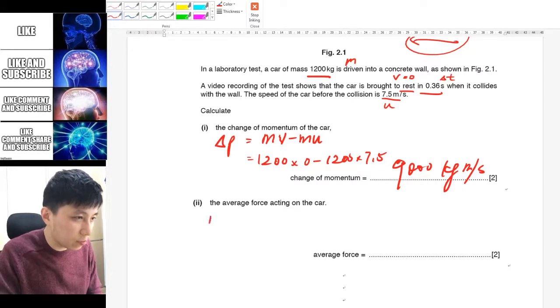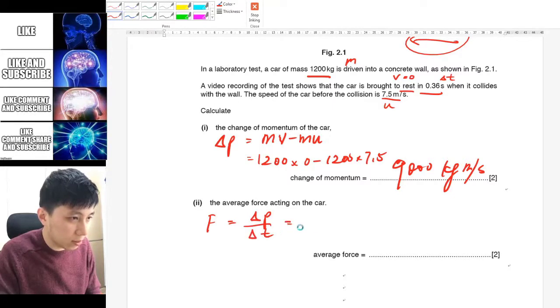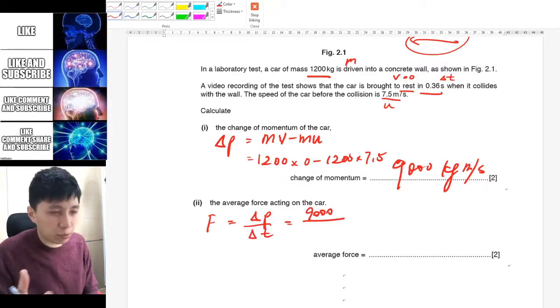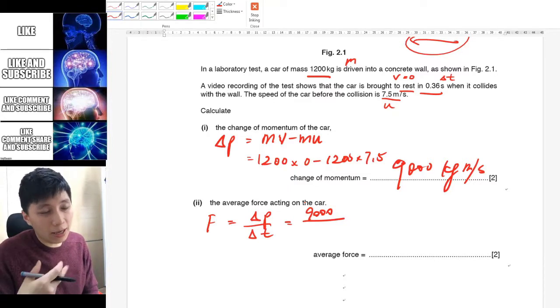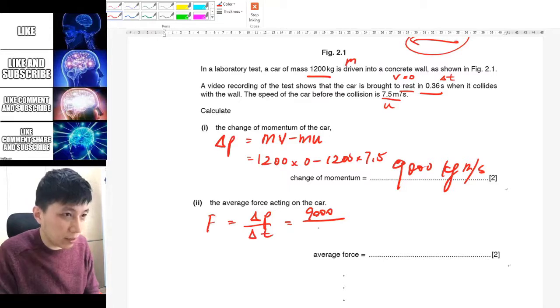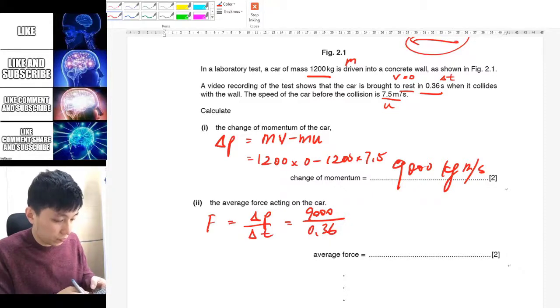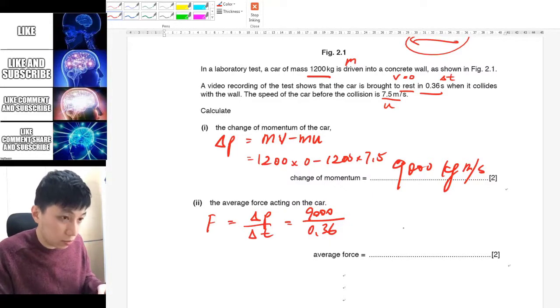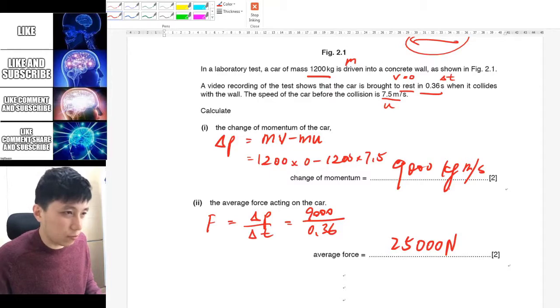Finding out the average force. So obviously for this one we want to use the equation that we have learned, F equals delta P over delta T. And delta P is simply the one that you calculated earlier. So somehow they are trying to be very nice to you that they break down different parts. So 9000 divide the time which is 0.36 and that should give you 25000 N. So very simple. Just recall the equation and substitute.